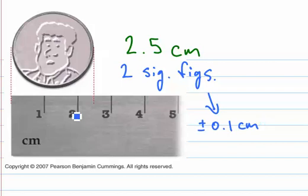That is, we interpolate between the smallest increments of our measuring device. And so by including this two sig figs, we say that the last significant figure is what we call our position of uncertainty.